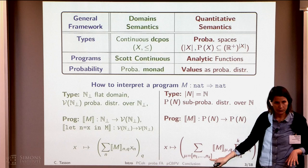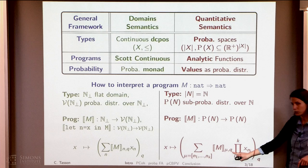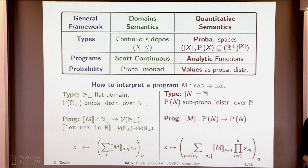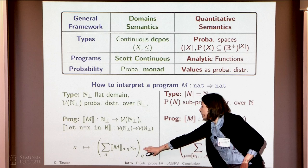I feed my program with this input to compute q, and I sum over all the possibilities. Here we are in a call-by-name setting, meaning that each time m calls its input, I compute again the outcome of x. So we have similar settings but different strategies of evaluation. In the domain semantics we have call-by-value, and in the quantitative semantics we have call-by-name.